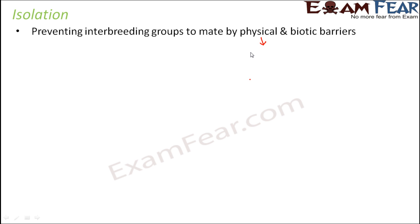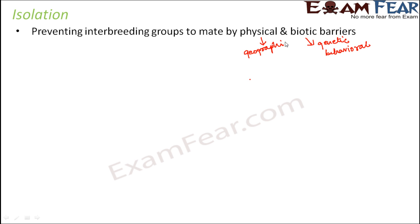The next barrier could be biotic barriers. Biotic barriers refer to anything related to living organisms, like behavioral barriers or genetic barriers. So biotic barriers include genetic barriers or behavioral barriers, while physical barriers primarily refer to geographic barriers — that is, location barriers.